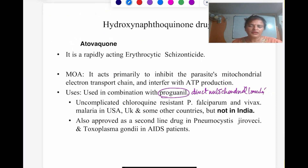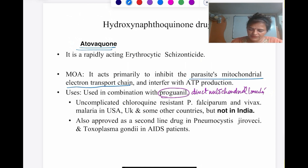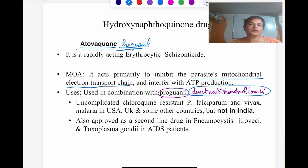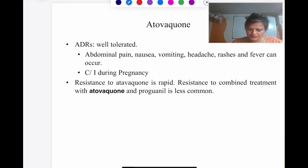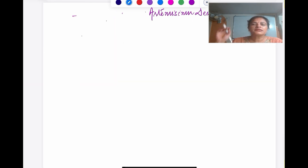The next drug is atovaquone, also an erythrocytic schizonticide. It interferes with the parasite's mitochondrial electron transport chain. It is usually given with proguanil, which exerts direct mitochondrial toxicity — a synergistic combination. This combination is not used in India but is used in the USA and UK as a second-line drug, and is also approved for Pneumocystis jirovecii and Toxoplasma gondii in AIDS patients. Due to resistance risk, it is always given in combination.